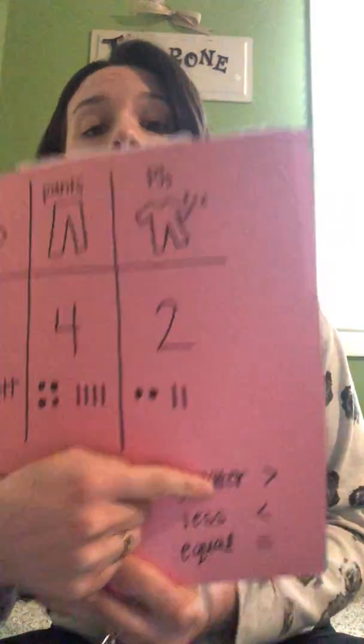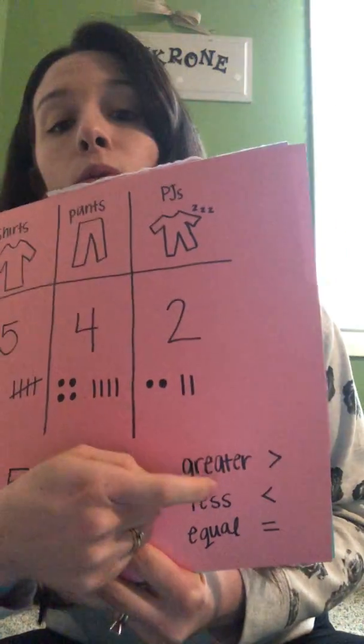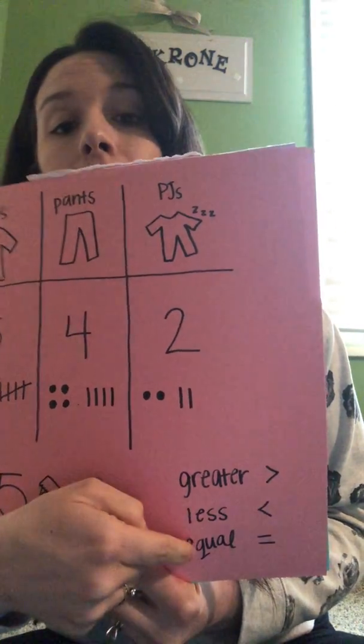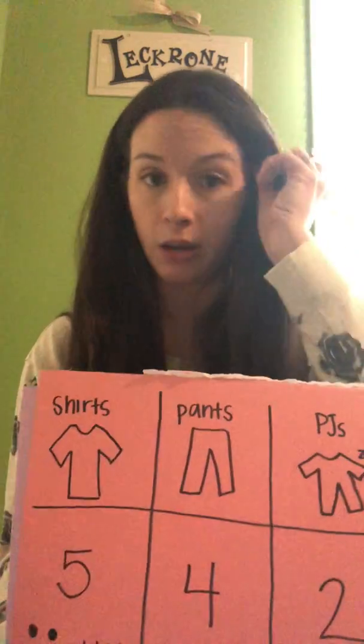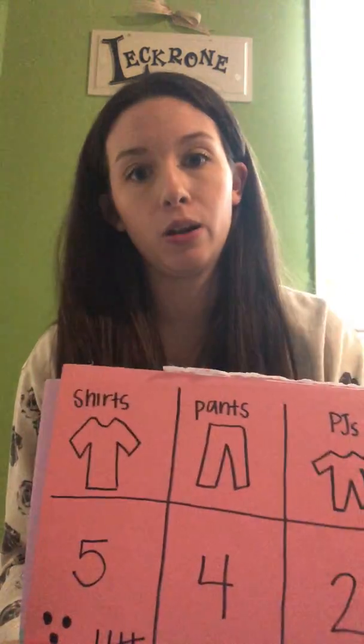These are the symbols that we were learning at school: greater than, less than, and equal to. So if they were the same number, we would use the equal sign. We wouldn't even use the alligator.